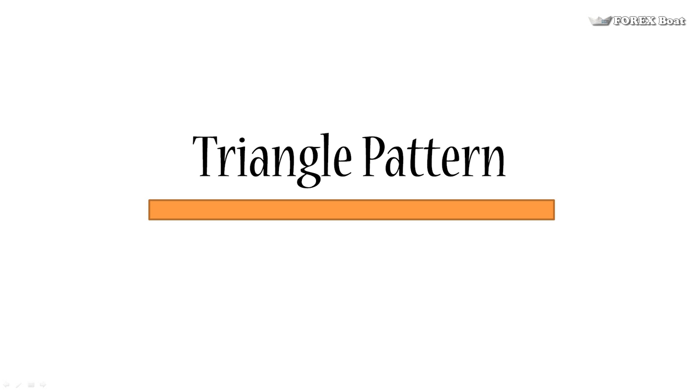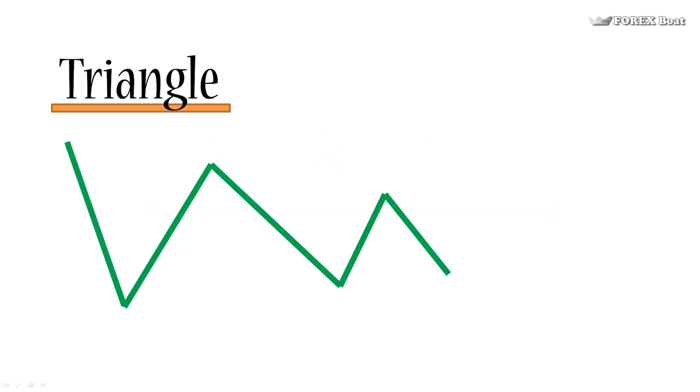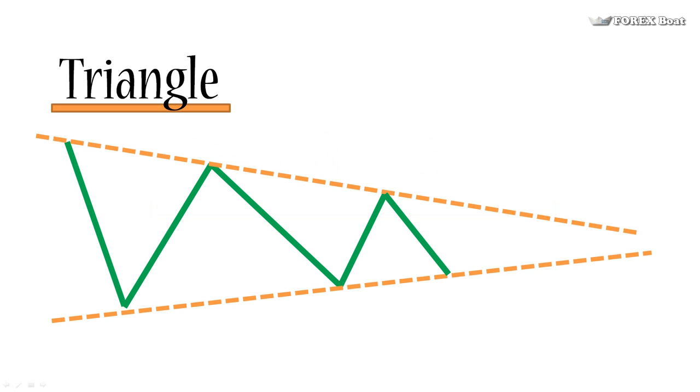So here we've got a hypothetical chart that's moving sideways. If we draw a line above and below the chart, we'll see right away that the price is in a triangle formation. Where can you go from here next?